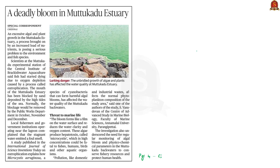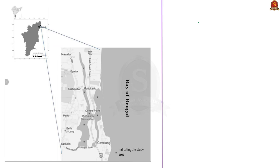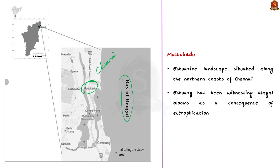This news article is about the algal bloom in the Muttukadu estuary. We will be learning about algal blooms and eutrophication. Muttukadu is an estuarine landscape situated along the northern coast of Chennai. This estuary has been witnessing algal blooms as a consequence of eutrophication, according to reports based on a few studies.